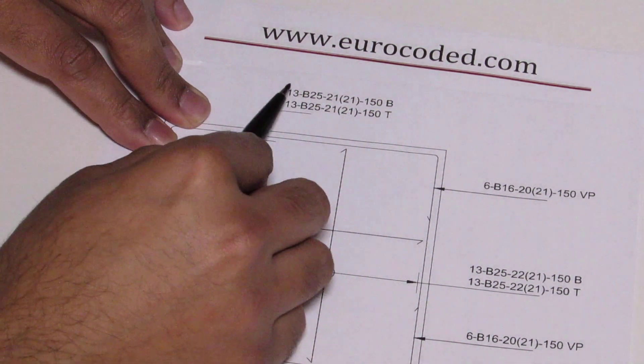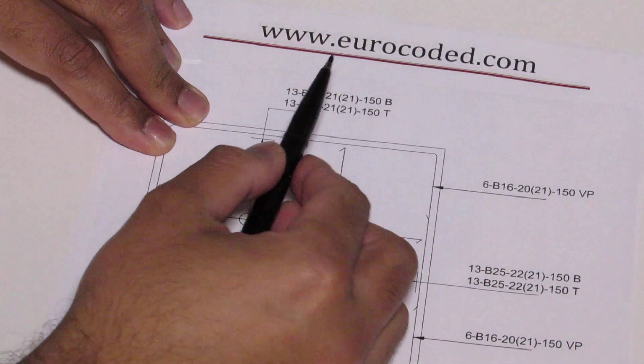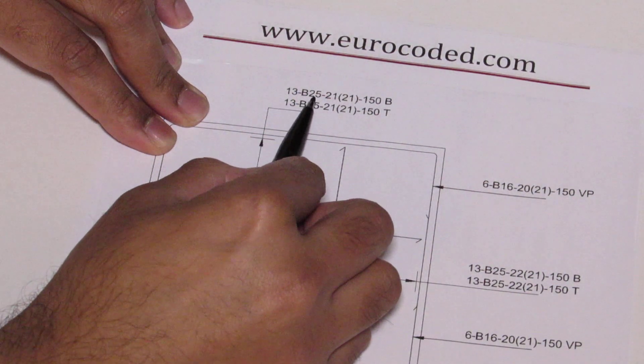And then the second set B25 is the bar size and the grade. In this case 25 millimeter diameter bar.